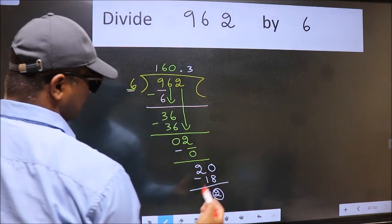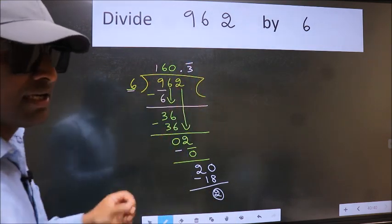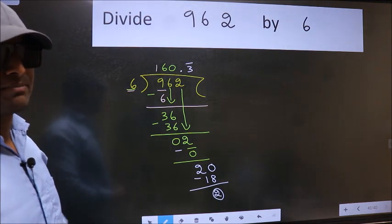Now we subtract. We got 2 again. That means we get bar on this number. Did you understand where does the mistake happen? You should not do that mistake.